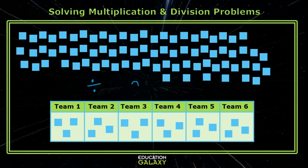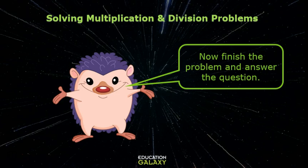We're going to take our 96 kids and divide them among the six teams, and this is all that we have to do to answer this question, so it's a one-step problem. Okay, now finish the problem and answer the question.